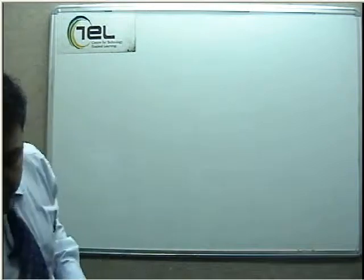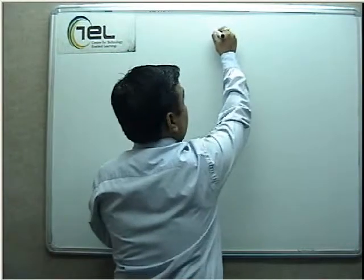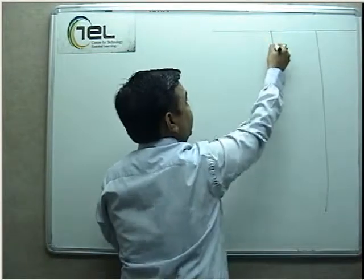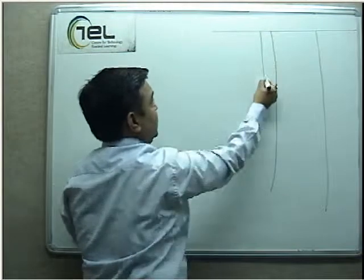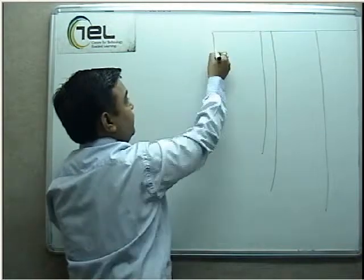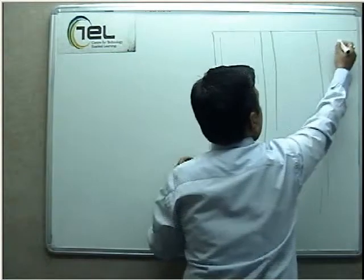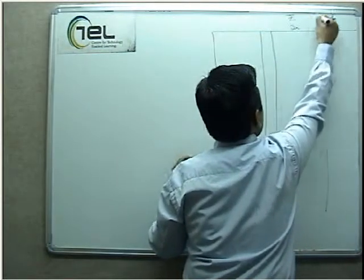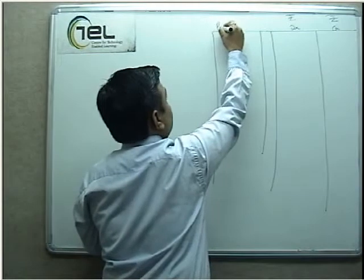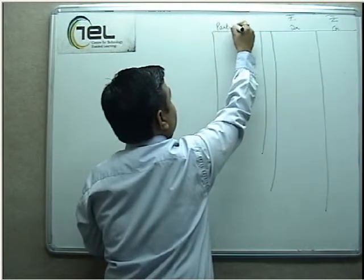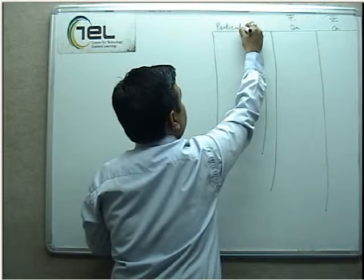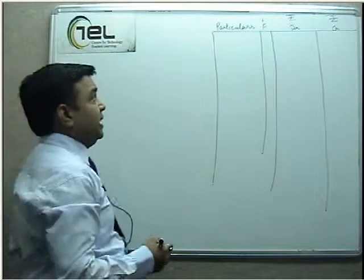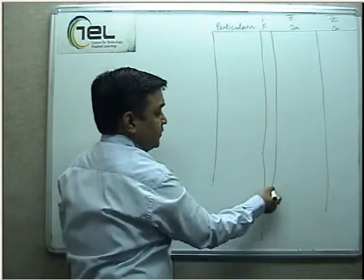Before proceeding to the transactions, let us be very clear about the format. As you have read in the definition, Accounts must be recorded in a significant manner, so formatting is very important. The format of Journal has columns for Date, Particulars (description of the entry), Ledger Folio (the page number of the Ledger on which this entry will go), Debit Rupees, and Credit Rupees. This format will remain the same for every transaction.